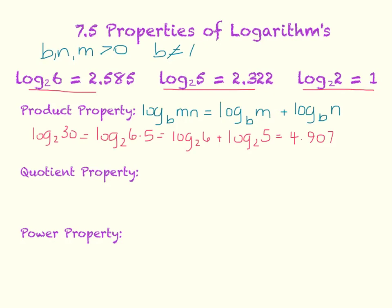The next property is the quotient property, which says log base b of m divided by n — quotient means division — can be rewritten as log base b of m subtract log base b of n.